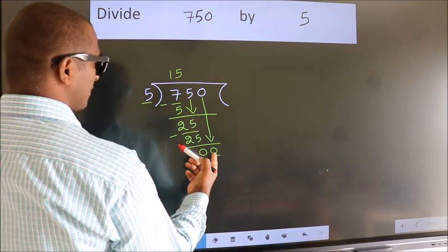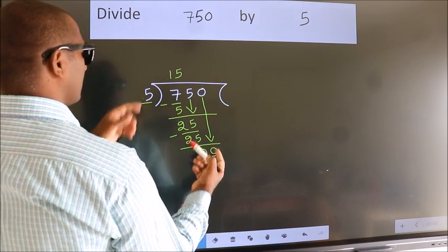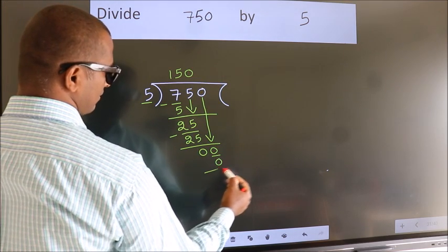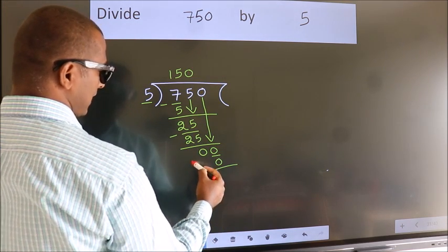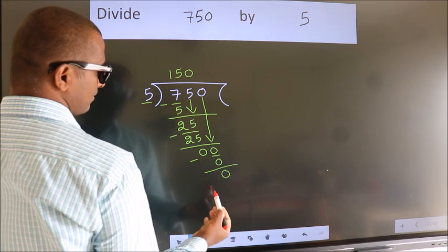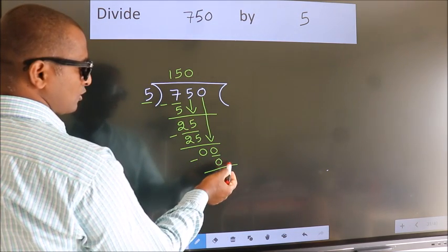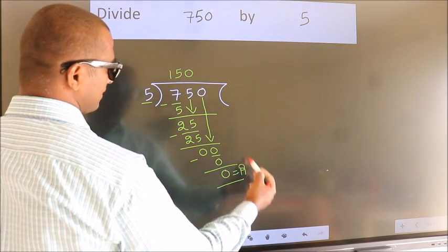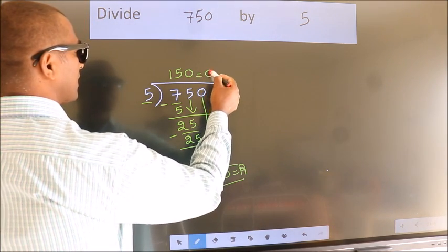When do we get 0? In the 5 table, 5 times 0. Now we subtract. We get 0. No more numbers to bring down, so we stop here. This is our remainder. This is our quotient.